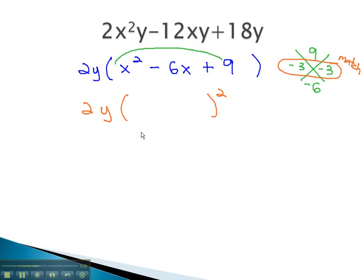Remember, the 2y, the GCF, will always be in front. We factor the perfect square by taking the square roots of the first and last terms. The square root of x² is x, and the square root of 9 is 3.